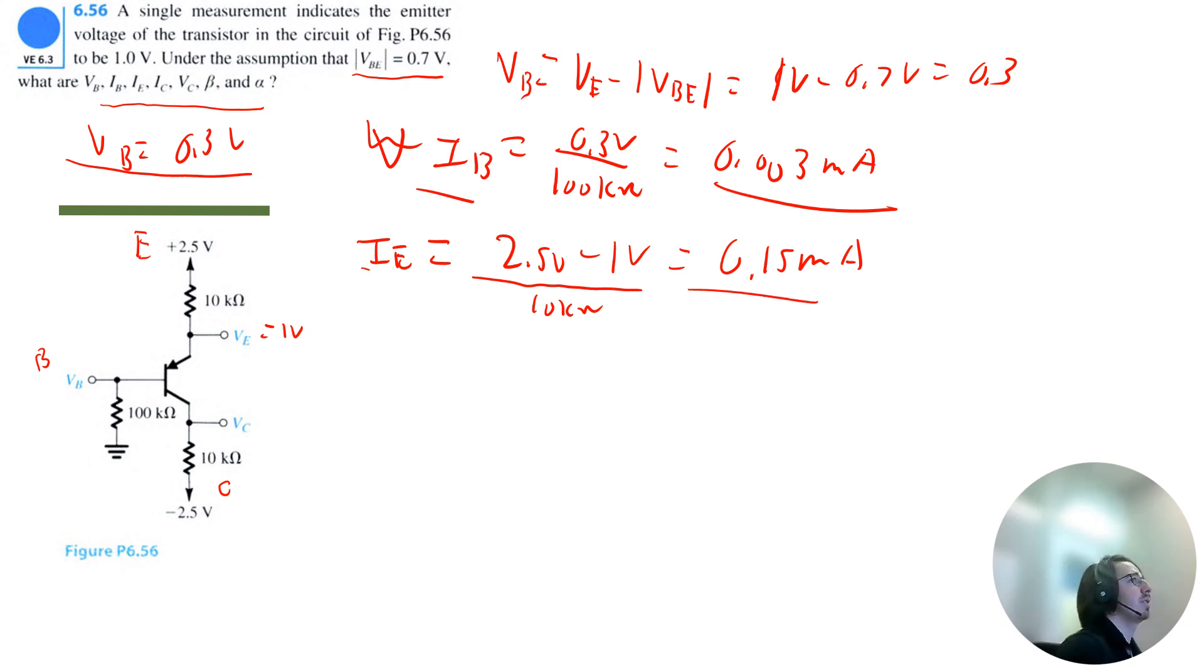Okay, now we can calculate the collector current by doing emitter current minus base current. So that's 0.15 milliamps minus 0.003 milliamps. And that's equal to 0.147 milliamps.